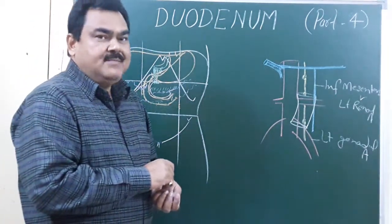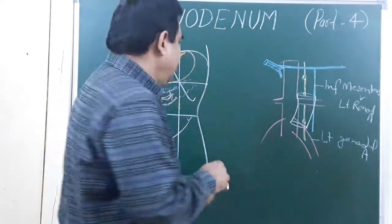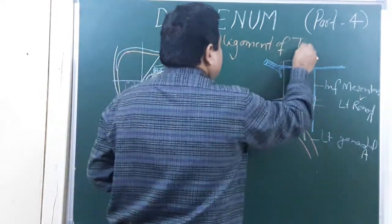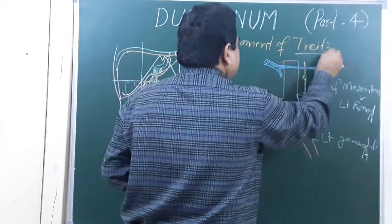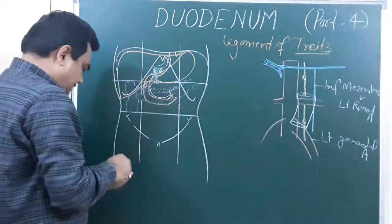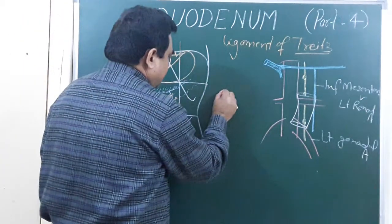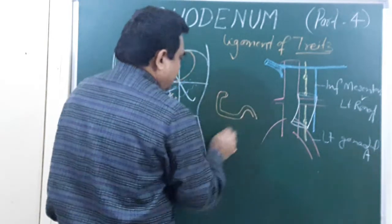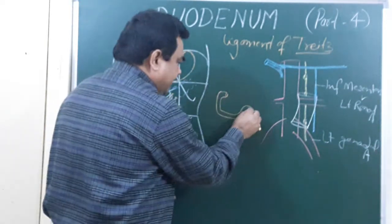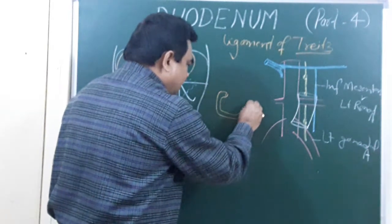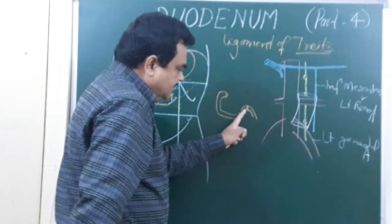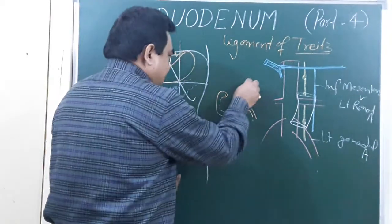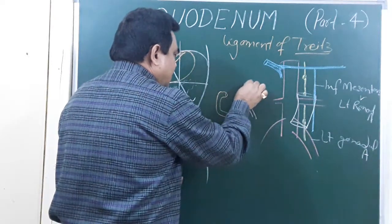One important structure is the suspensory ligament of the duodenum, also called the Ligament of Treitz. If you make a diagram, the first, second, third, and fourth parts of the duodenum can be represented. At the junction of the fourth part with the jejunum — the duodenojejunal junction — one ligament is present here.